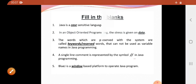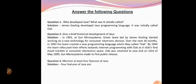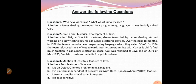Next, answer the following questions. In this chapter I have gone through all of your questions. Let us start with question number one: who developed Java and what was it initially called? The answer is James Gosling developed Java programming language. It was initially called Oak, because while making this program, Gosling saw oak trees out of his window and kept that name for his language.